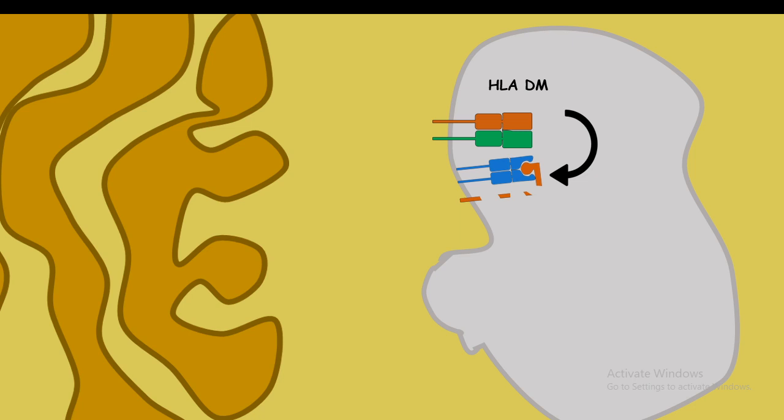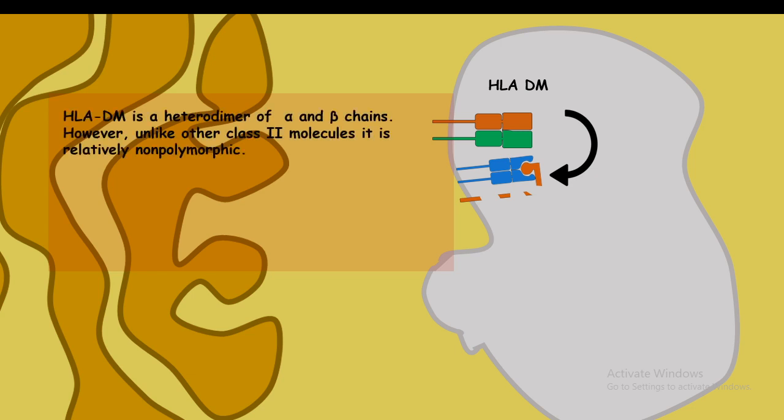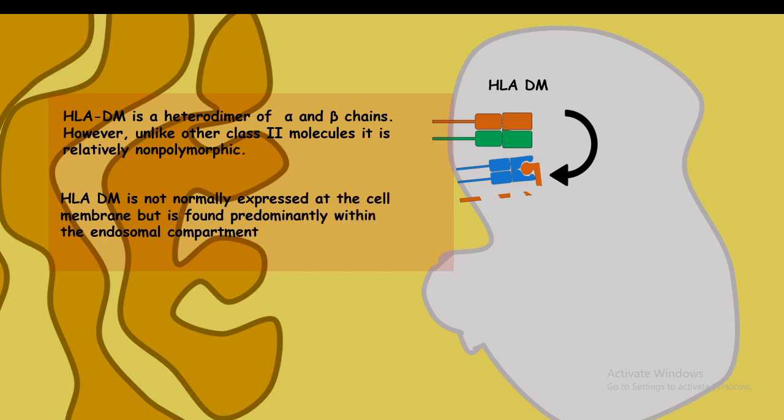Another non-classical MHC molecule known as HLA-DM helps to remove this clip peptide, such that the MHC's peptide binding groove is now open and exogenous antigens can be loaded. HLA-DM is not normally expressed on the cell surface but is mostly found in the phagosome or endosomal vesicles.